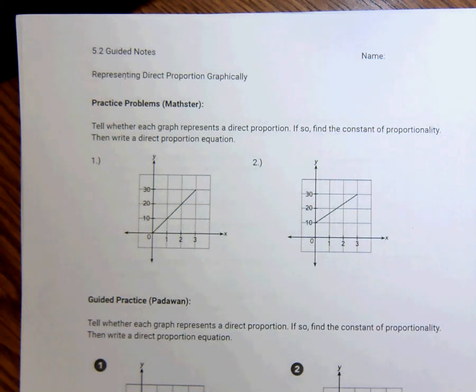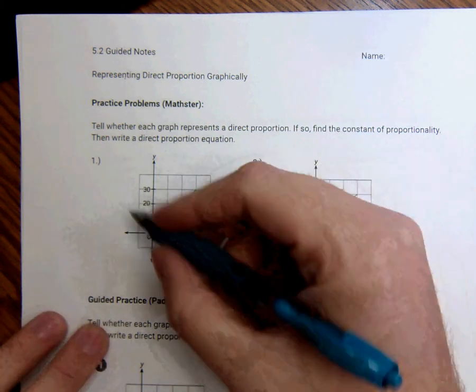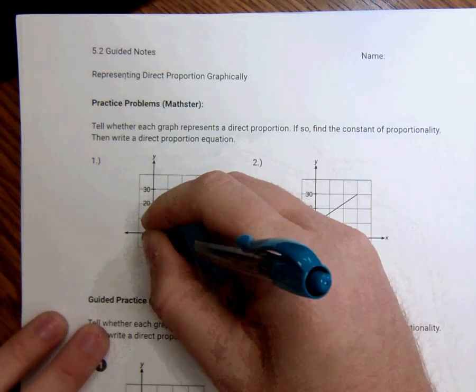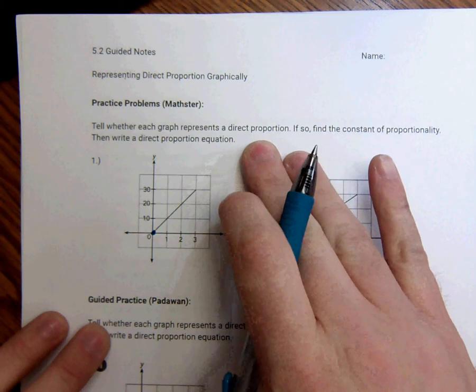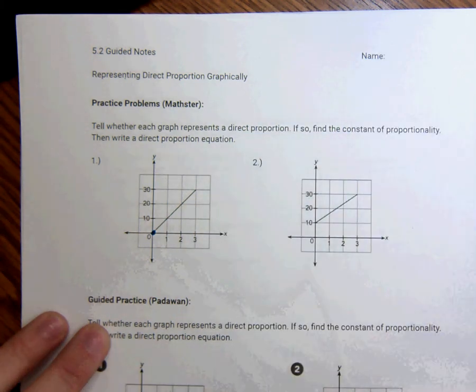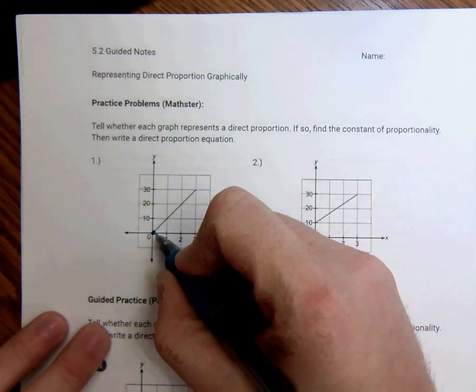And so there's really two rules. One, it is a straight line. And two, it goes through the origin. As long as both those two rules are met, it is a proportional relationship. So this is tell whether the graph represents a direct proportion. Yes, because it goes through 0,0, and it's a straight line.